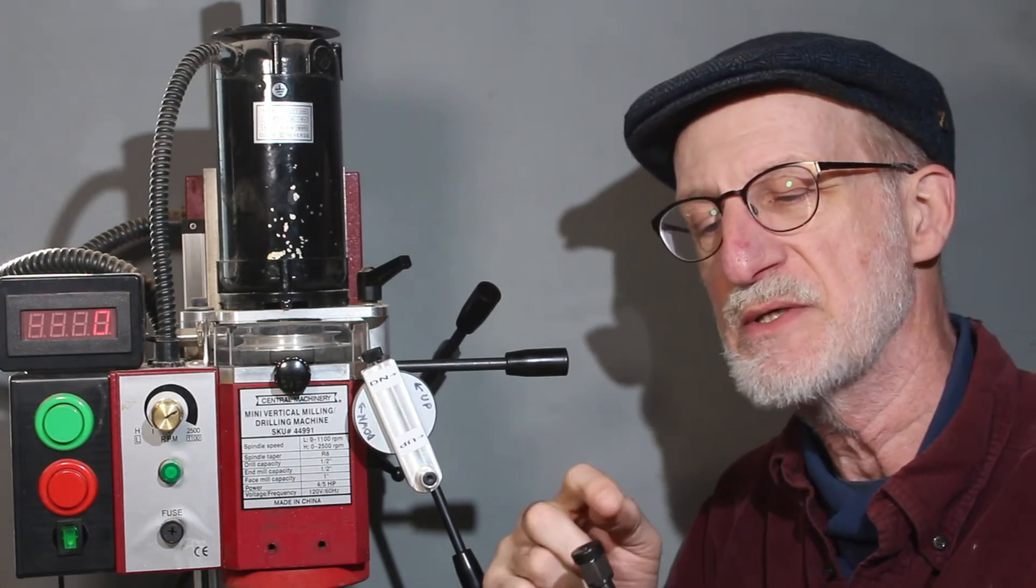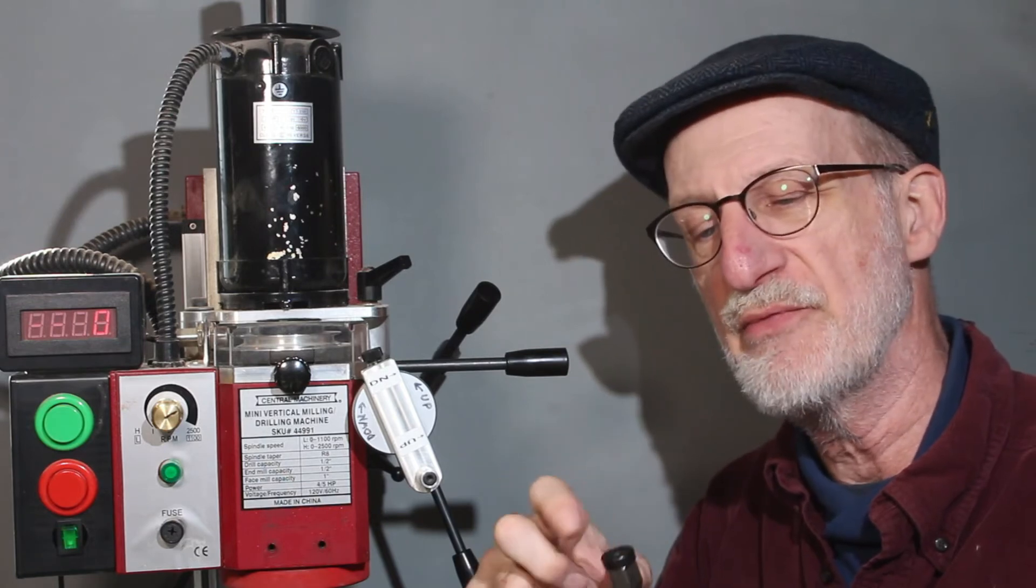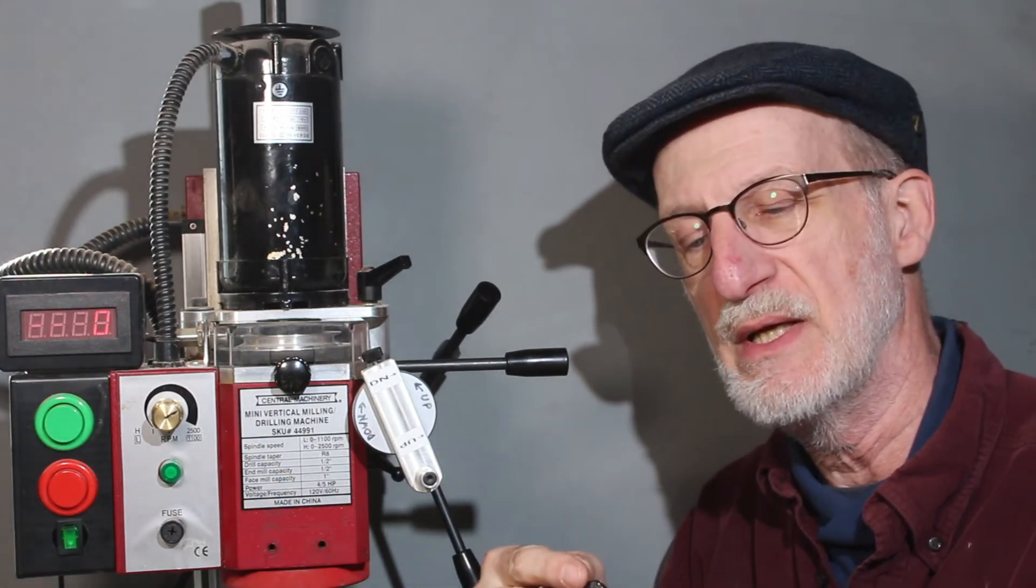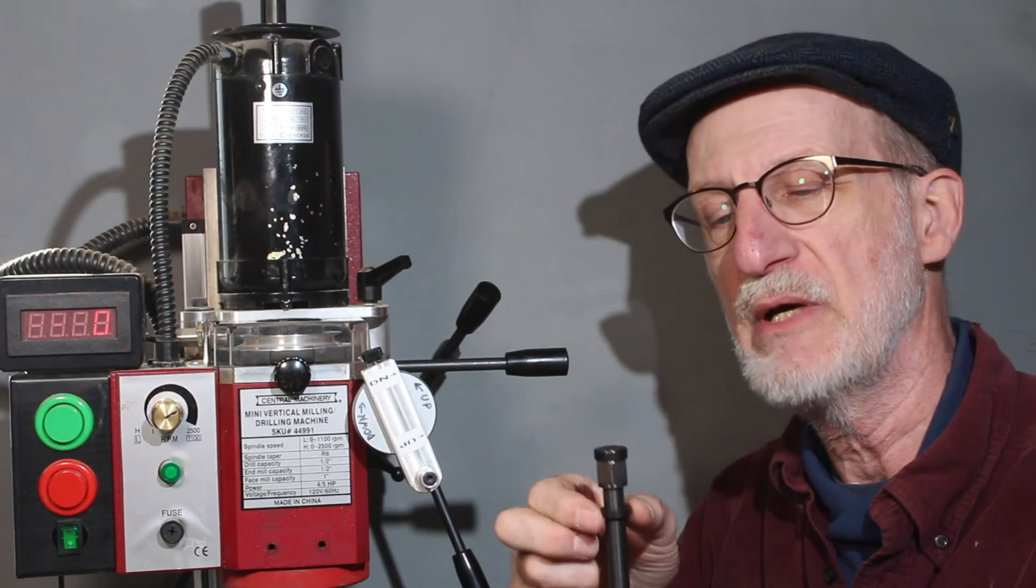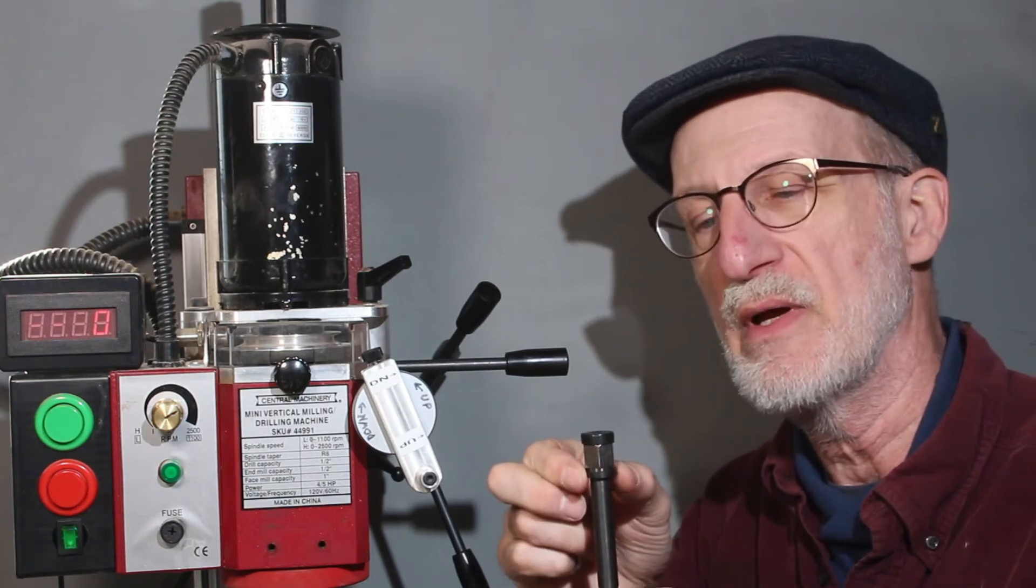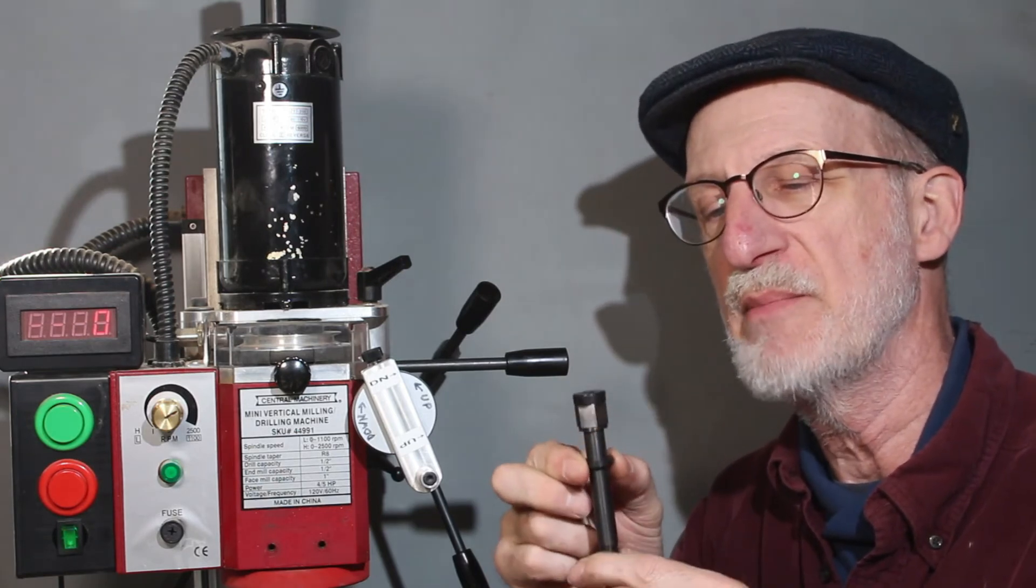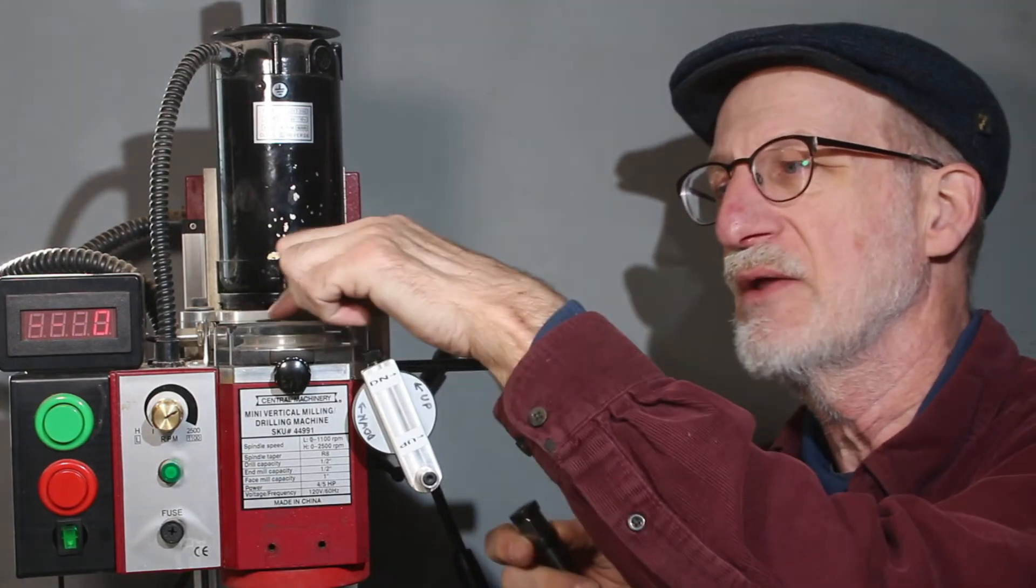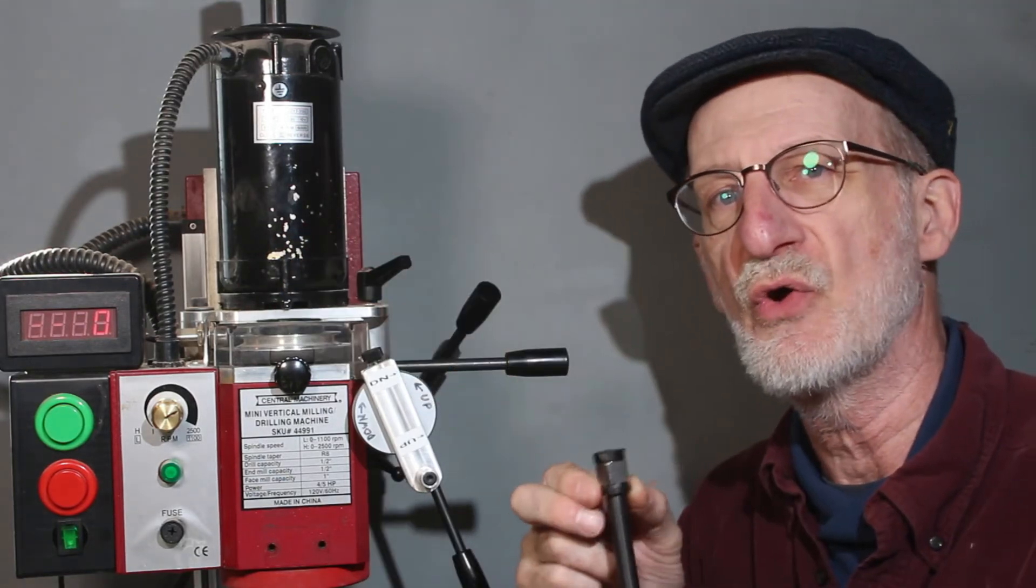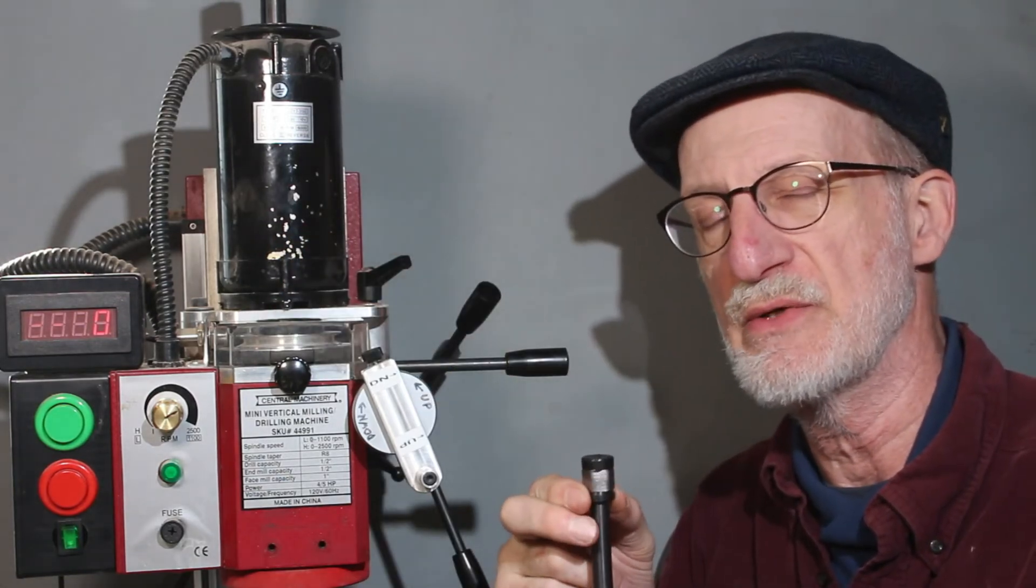So what I did was I made a small Delrin washer that screwed in from the top with a recessed screw, and then also I made a Delrin washer here to soften up the bearing surface between the nut and the hole in the quill so that it doesn't gall against it. And it also just makes it easier to turn.